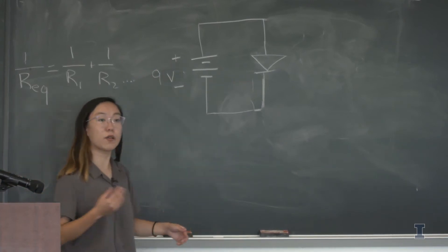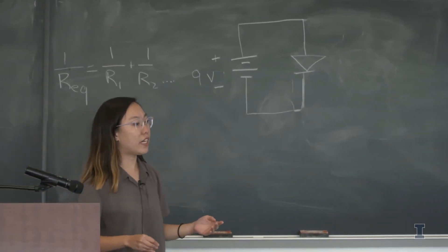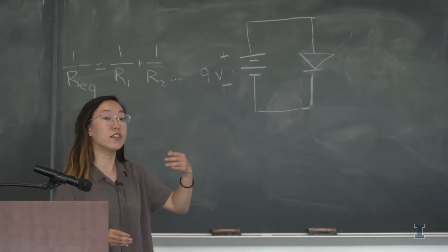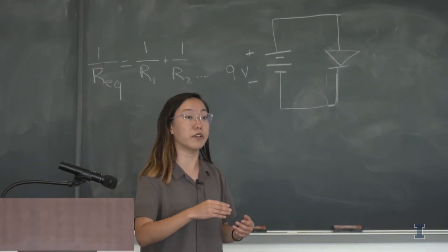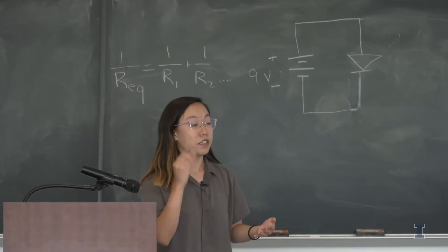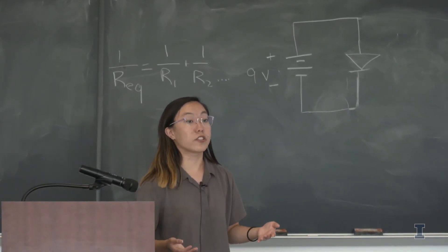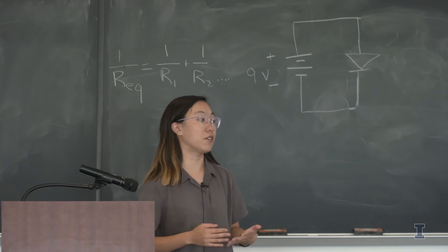Diodes are basically one-way devices so they only allow current to flow through one direction. You guys already did that with the experimental design. You saw that if you did the short leg, it wouldn't work no matter what, but if you did the long leg, it would work.